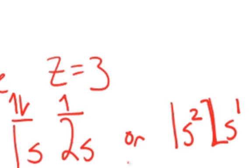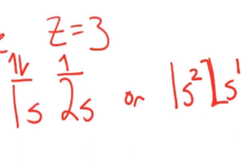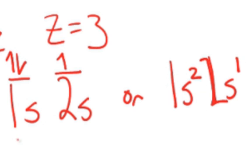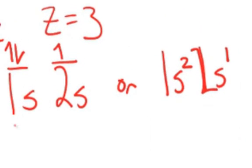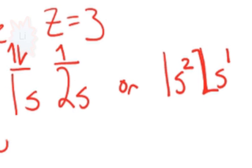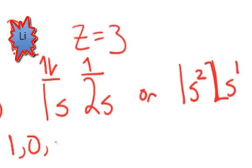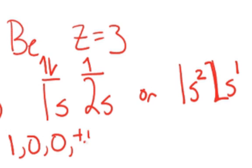And then if we want to write the associated quantum numbers for this orbital notation, then for the 1s, the quantum numbers associated for the 1s would be 1, 0, 0, and one of the electrons, the spin would be plus 1/2.